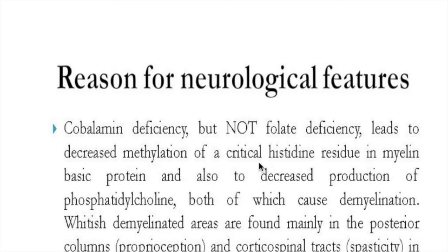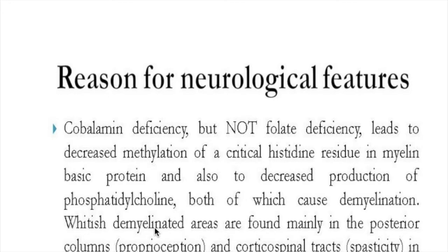Cobalamin deficiency leads to decreased methylation of a critical histidine residue in myelin basic protein, and also leads to decreased production of phosphatidylcholine — both of which cause demyelination. Whitish demyelinated areas are found mainly in the posterior columns and in the lateral corticospinal tract. This disorder affects the myelin sheath, affecting the white matter of the spinal cord, while sparing the H-shaped gray matter.